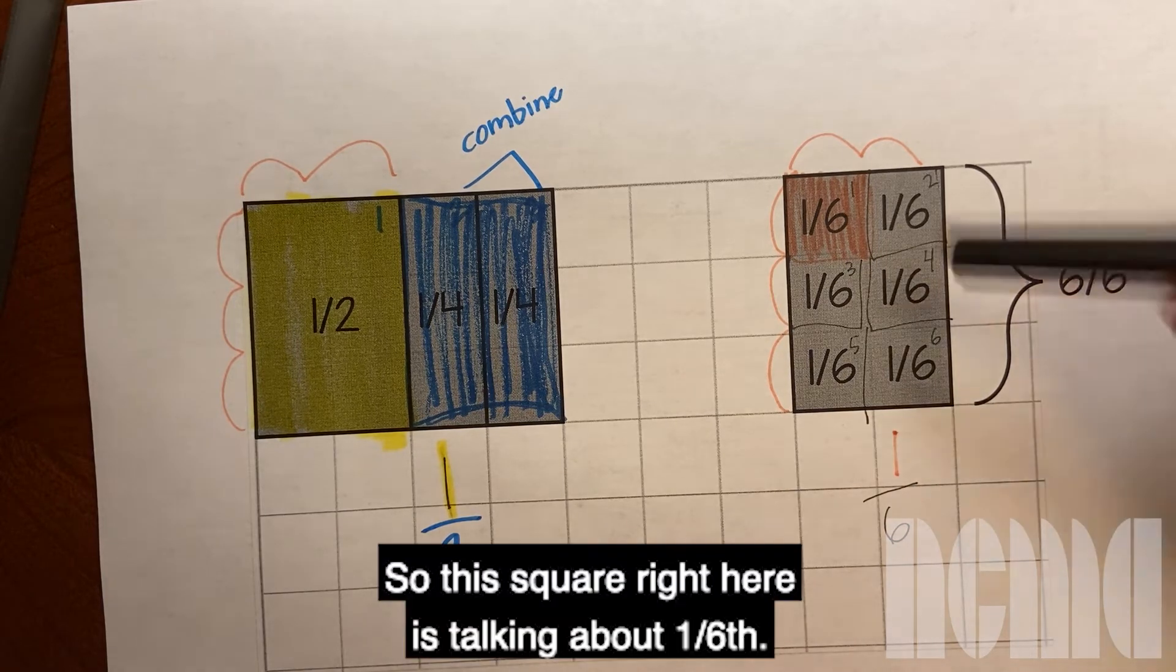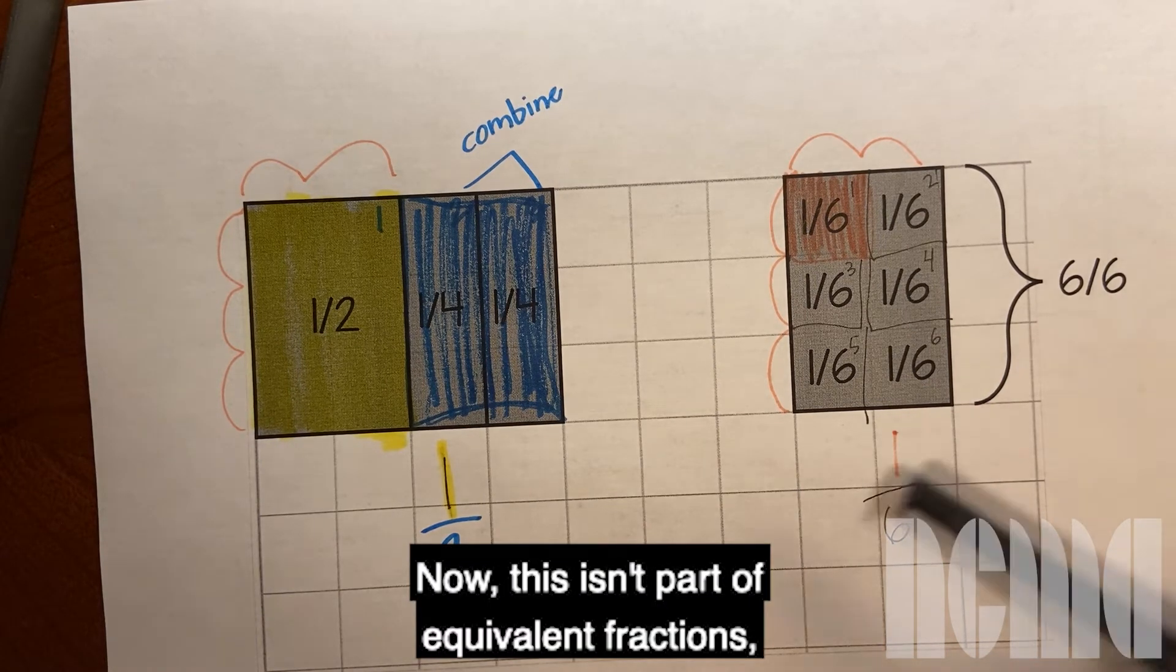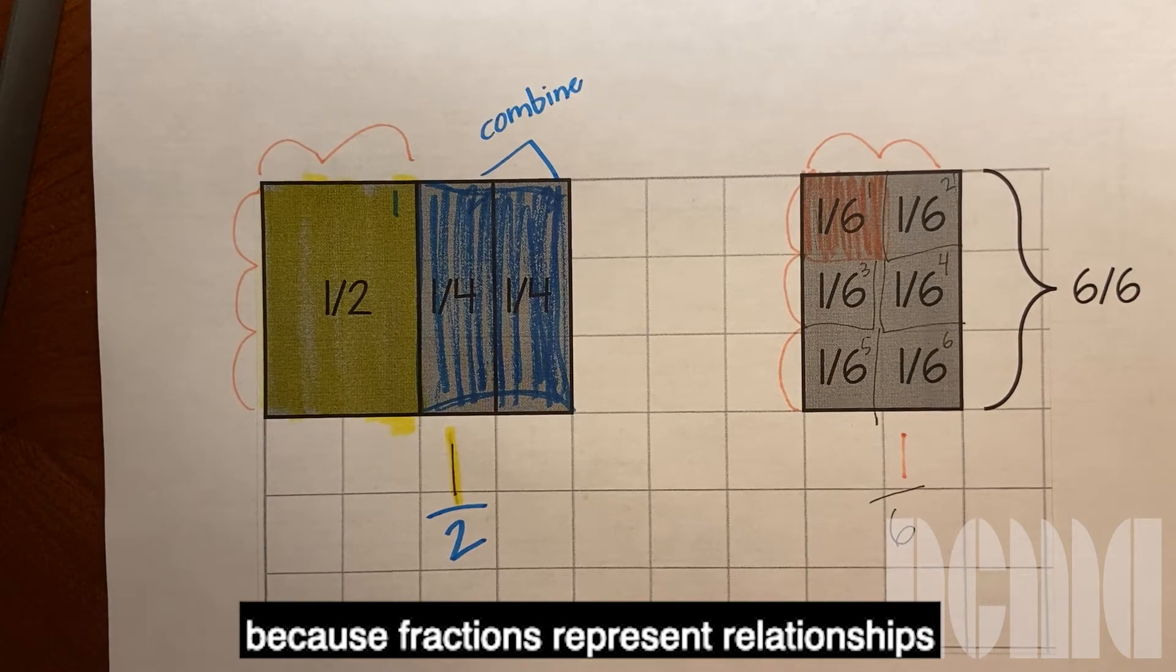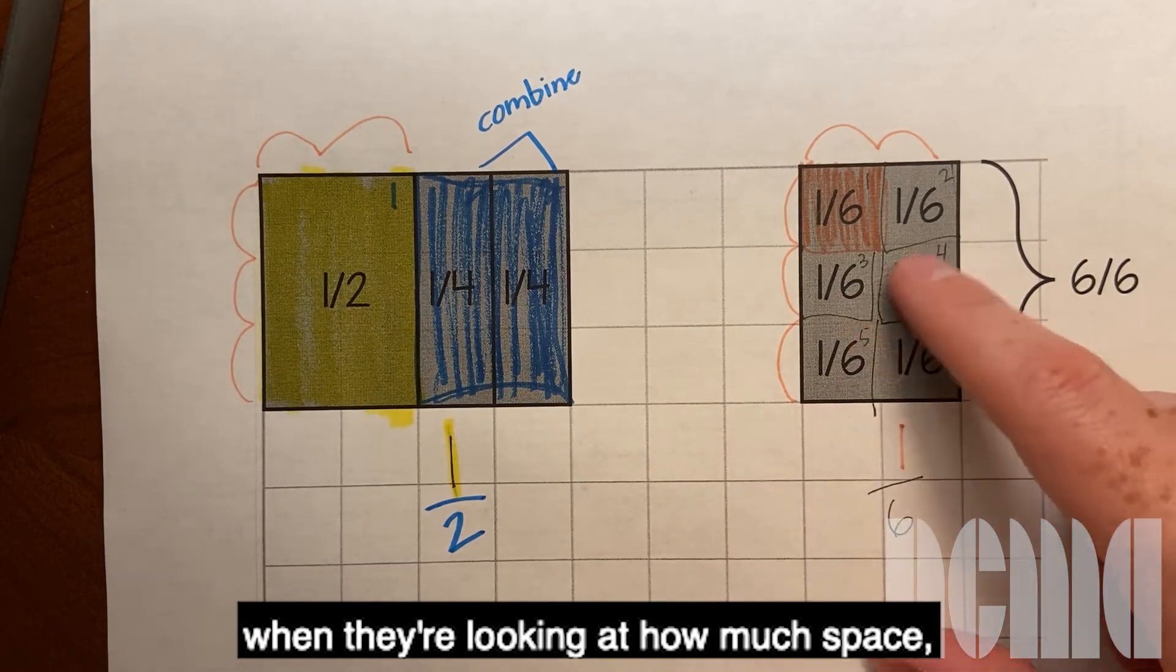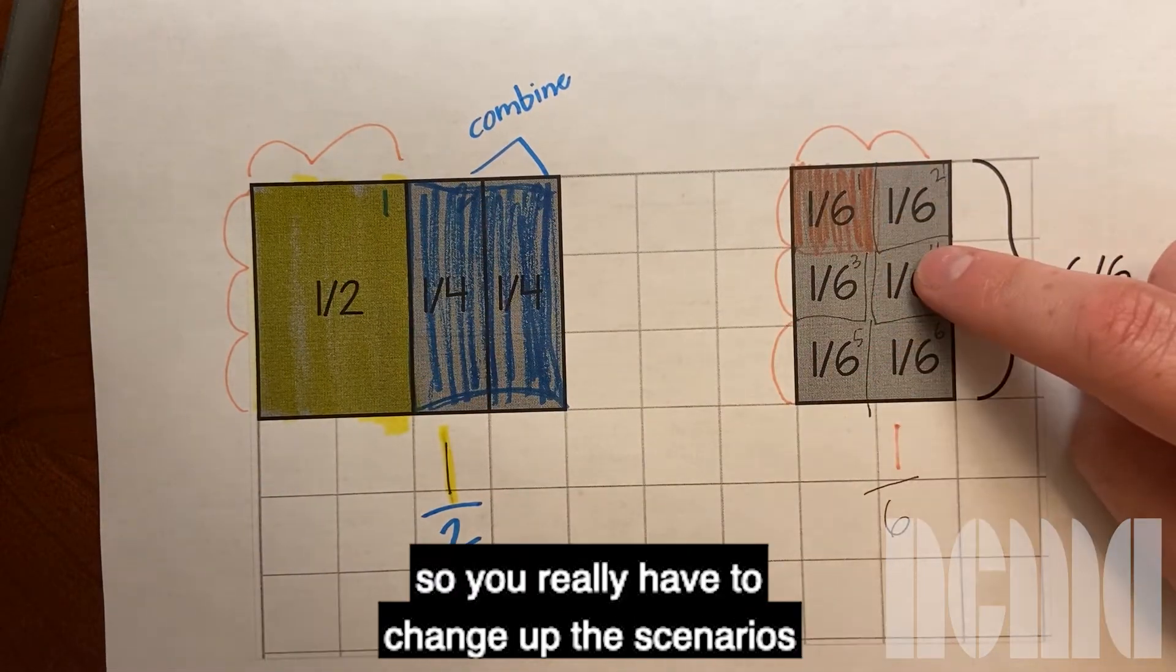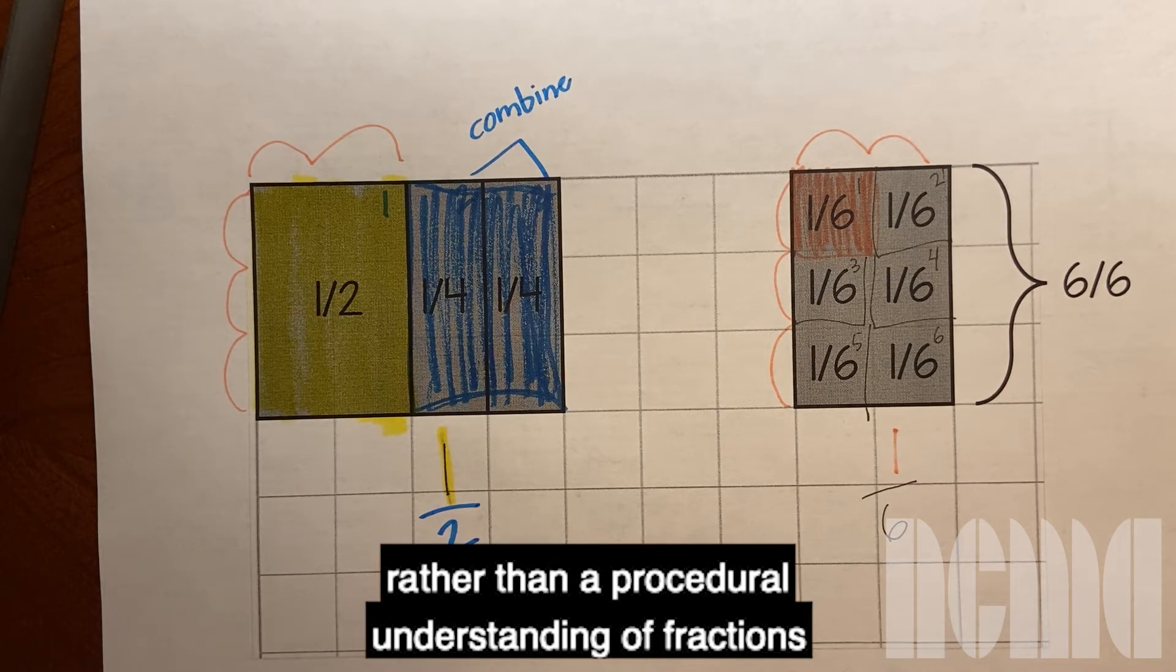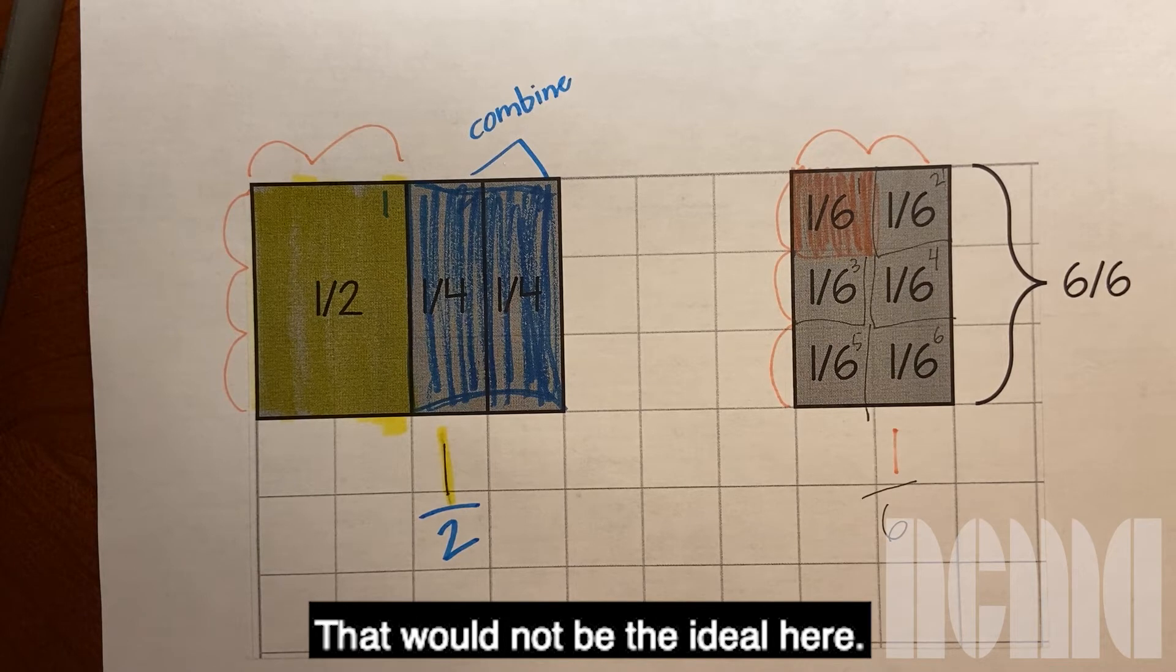So this square right here is talking about one sixth. Now this isn't part of equivalent fractions, this half is not equivalent to this because fractions represent relationships between parts and wholes. But students might get tripped up when they're looking at how much space this part takes up and how much space this whole takes up. So you really have to change up the scenarios and relationships each time so that they can develop a strong conceptual understanding of equivalent fractions and what they mean rather than a procedural understanding of fractions and equivalent fractions so that they can just plug and chug. That would not be the ideal.